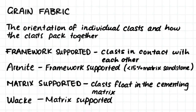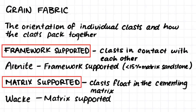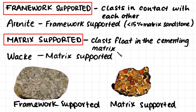Now we will consider the grain fabric of the sedimentary rock. The grain fabric is the orientation of the individual clasts and how the clasts pack together. If we have a framework supported sedimentary rock, this means that all the clasts are in contact with each other. Whereas if we have a matrix supported sedimentary rock, this means that the clasts float in the cementing matrix. Arnite, a type of sandstone, is a good example of a framework supported sedimentary rock. Sandstone is classified as an arnite if there is less than 15% of matrix within the sandstone. Wacky is the name we give to rock which is matrix supported — the clasts float within a sea of matrix. Here are examples of matrix supported and framework supported conglomerate sedimentary rock.